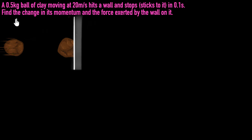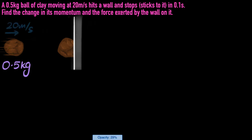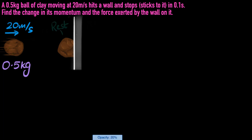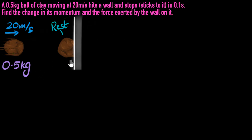We know that the ball of clay weighs 0.5 kilograms, so we know its mass. We know it's coming in at 20 meters per second, so its initial speed before hitting the wall is 20 meters per second. We know it hits the wall and sticks to it — it stops. So after hitting, it's no longer moving, it's stuck to the wall, so it's at rest. And we also know it takes 0.1 second for it to come to a stop.